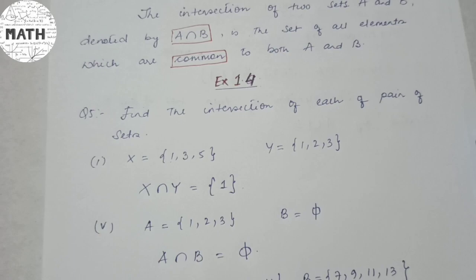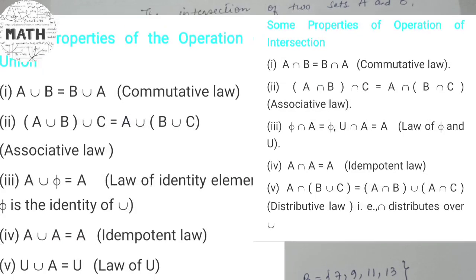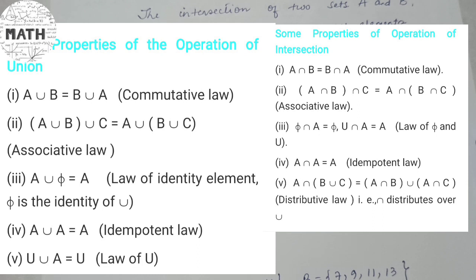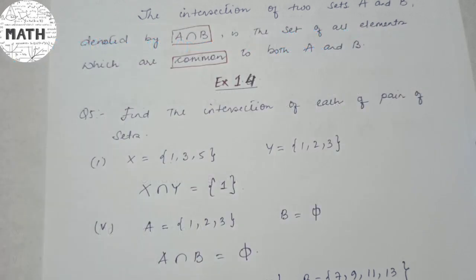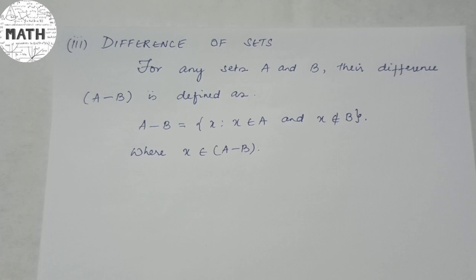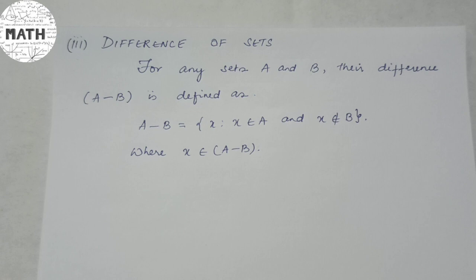There are some properties of union and intersection that will be shown in the video — please go through those. The next topic under operations on sets is the difference of sets. For any sets A and B, the difference A minus B is defined as the set of elements x such that x belongs to A and x does not belong to B — meaning elements of A only, not in B.